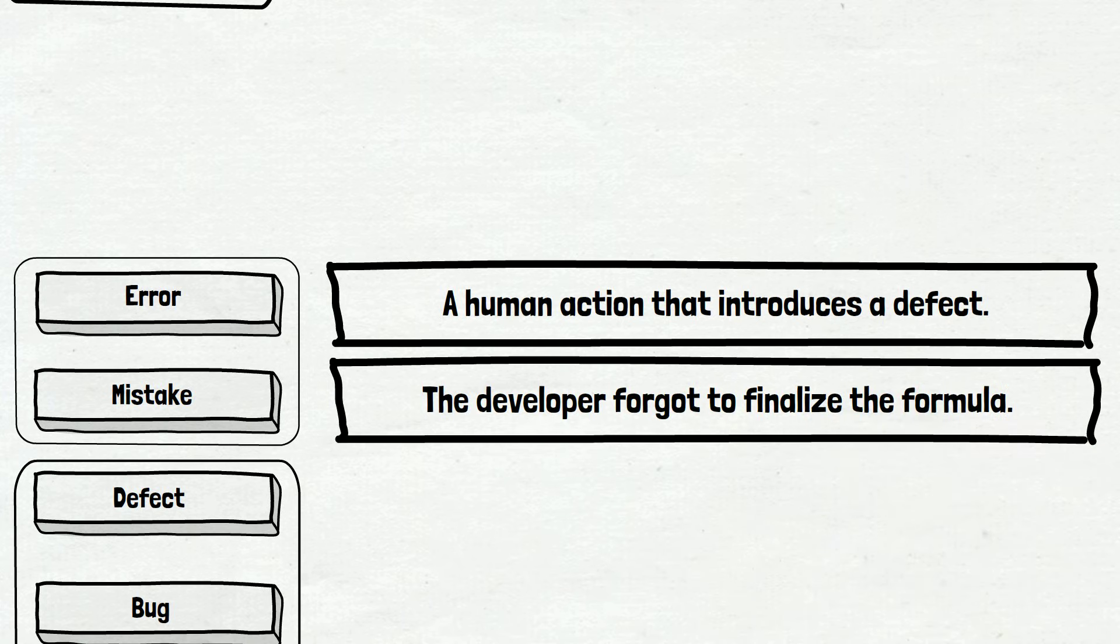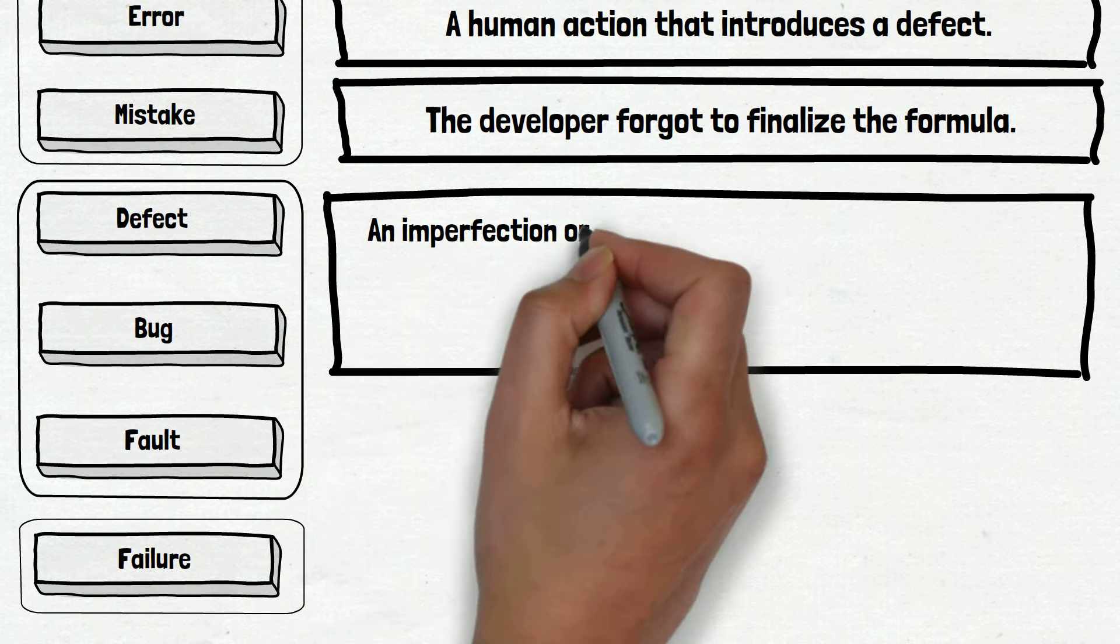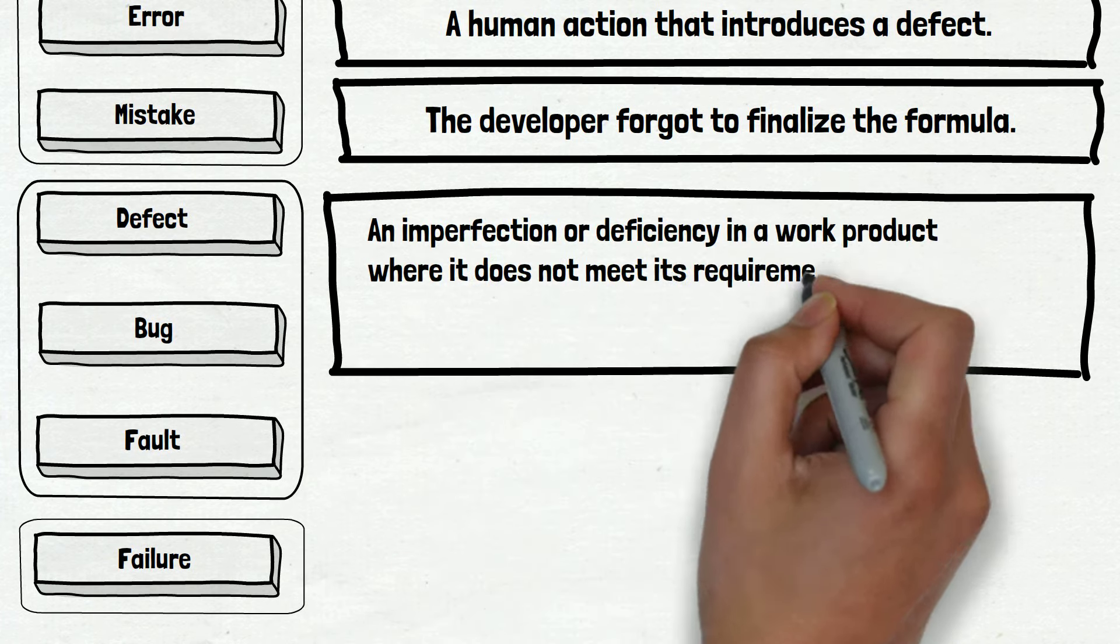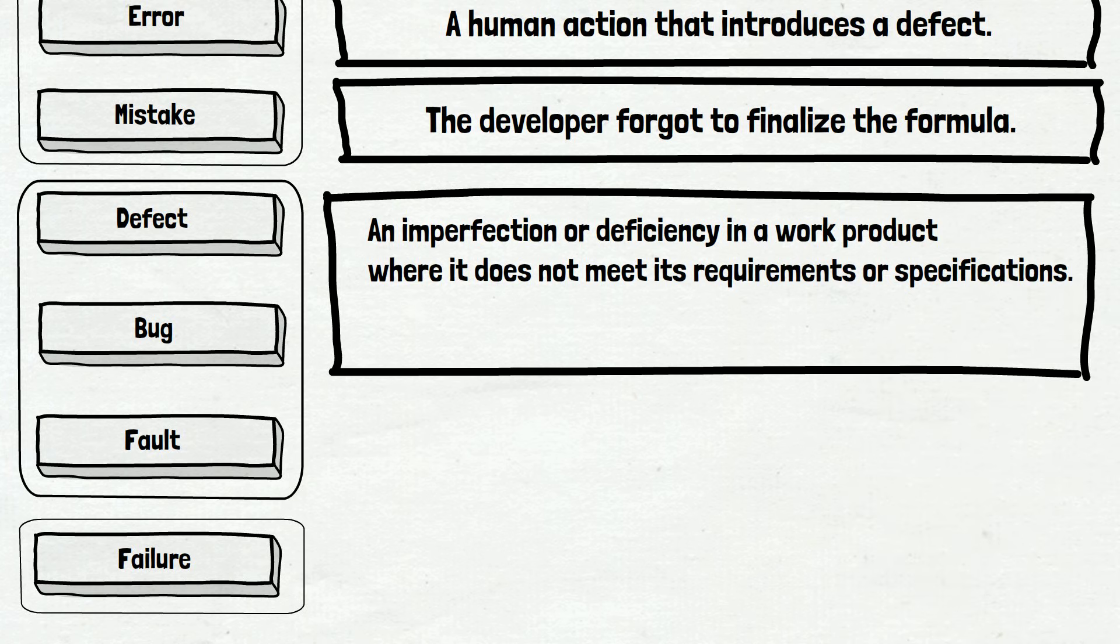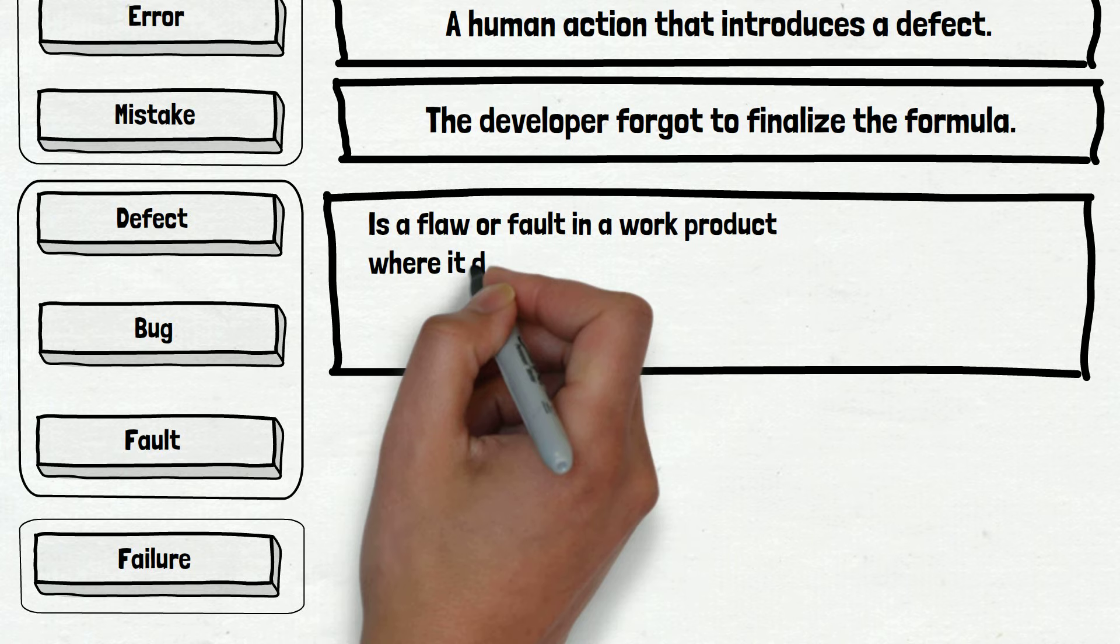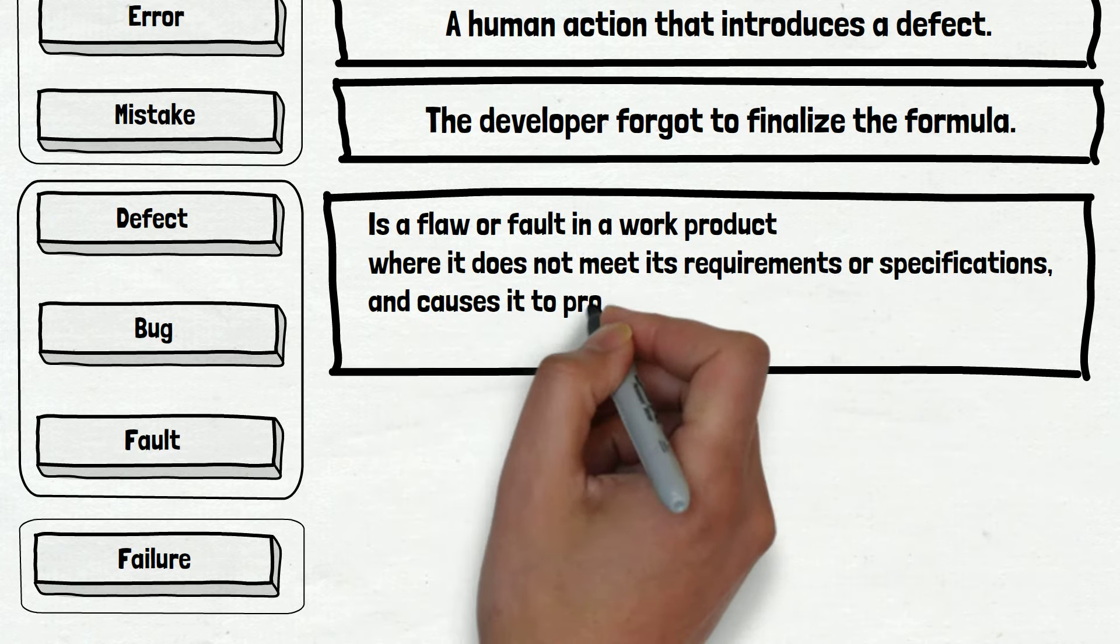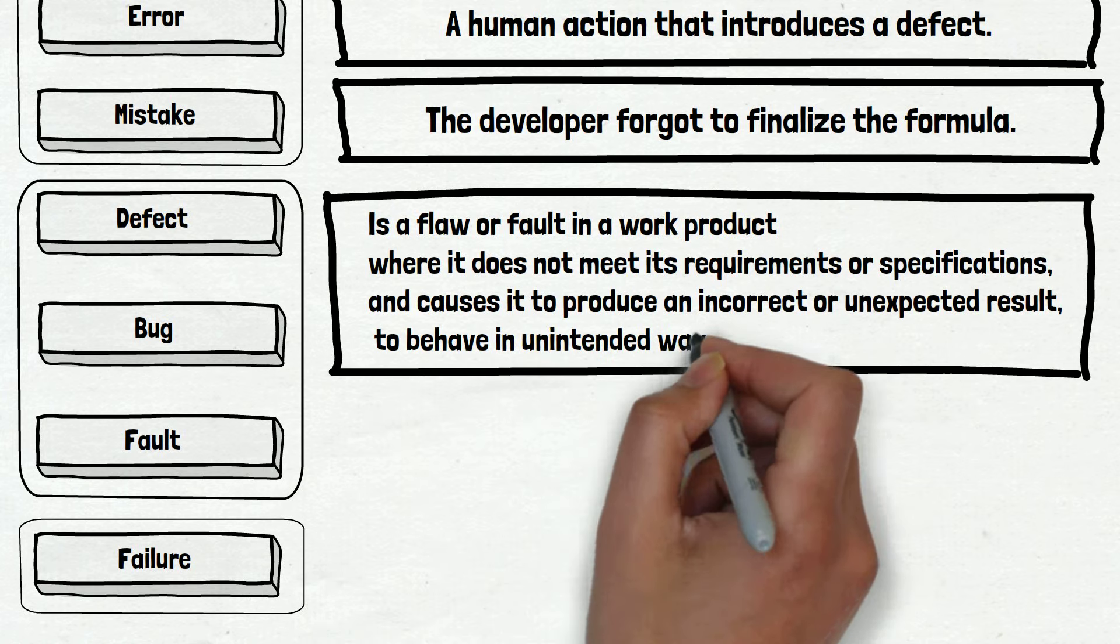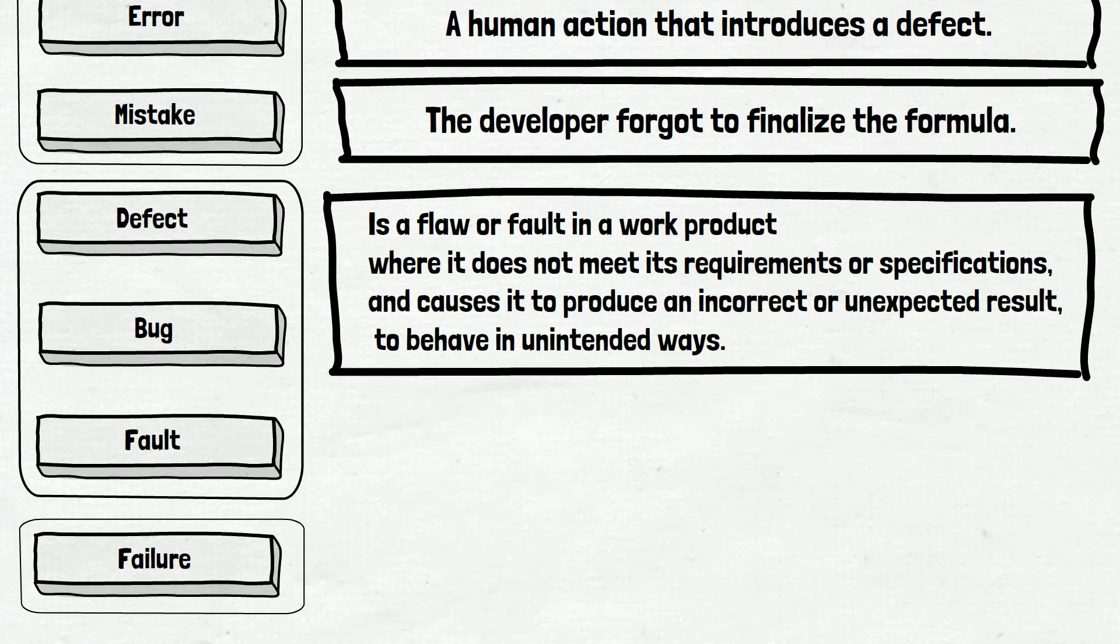The defect definition. According to the ISTQB, the defect is an imperfection or deficiency in a work product where it does not meet its requirements or specifications. And it's a good, complex, theoretical definition. And we are going to make it even more complex—at least have more words in it. So, it will sound like this: The defect is a flaw or fault in a work product where it does not meet its requirements or specifications and causes it to produce an incorrect or unexpected result or to behave in unintended ways. Mostly visualization should help to understand the concept.